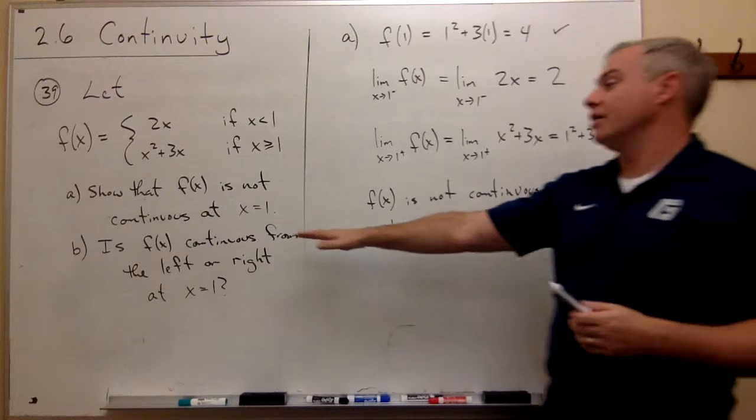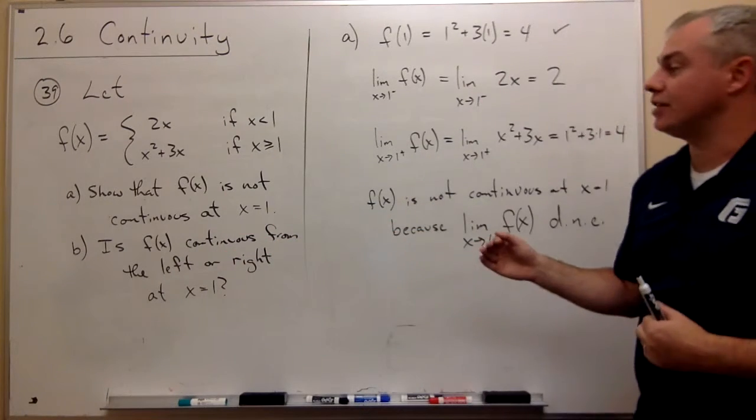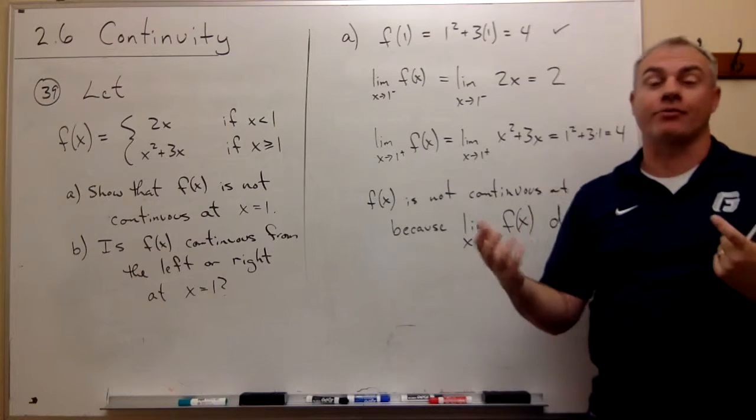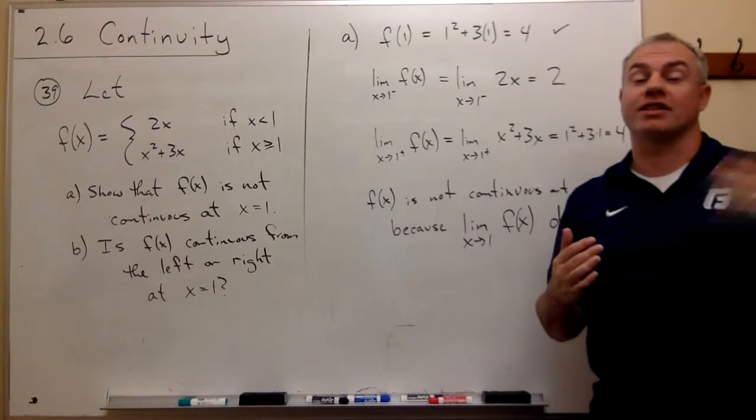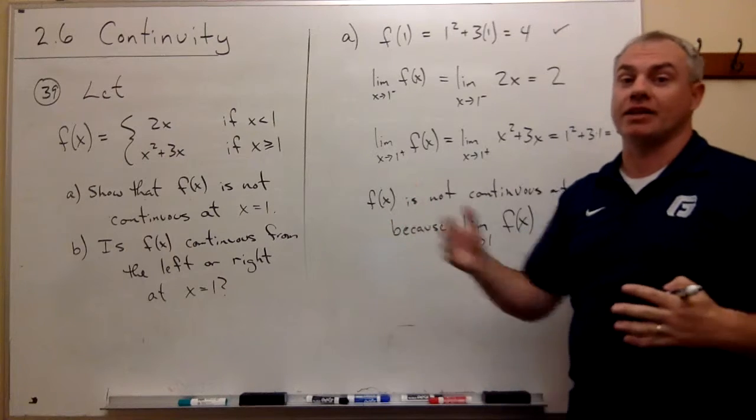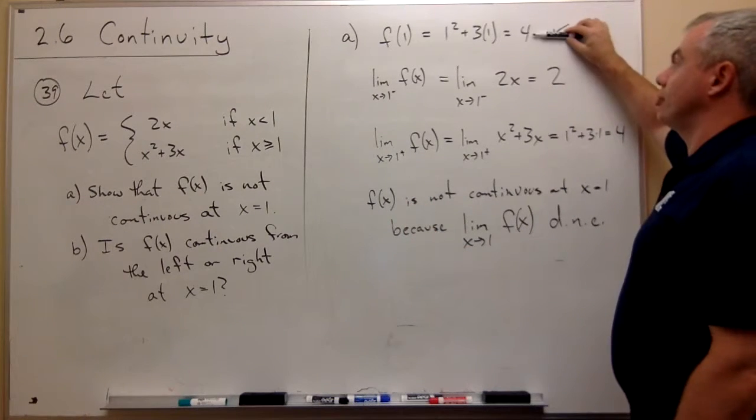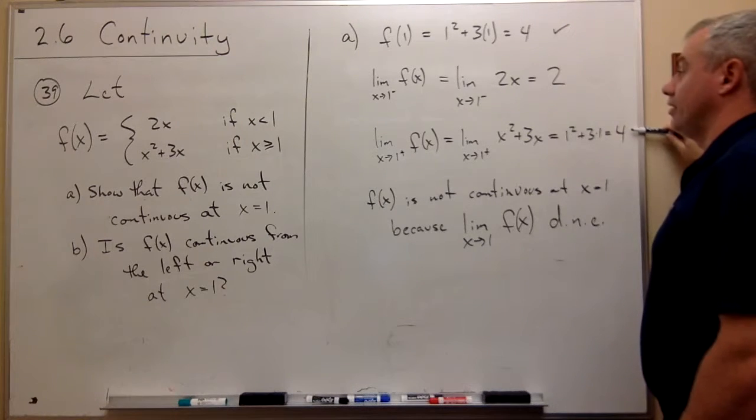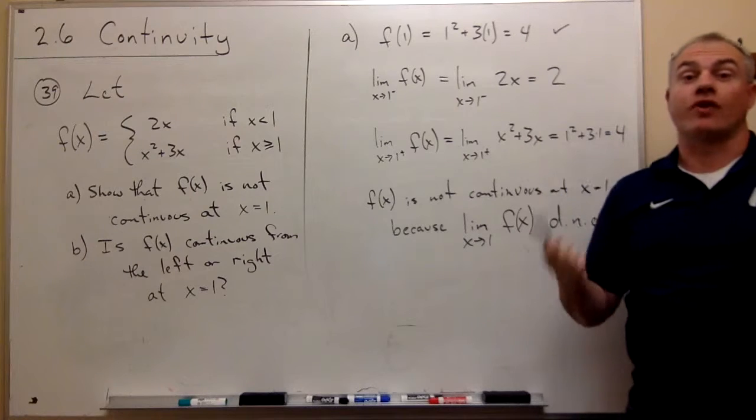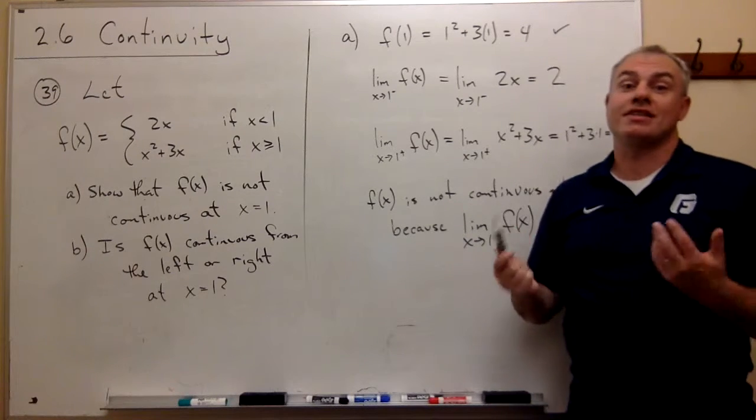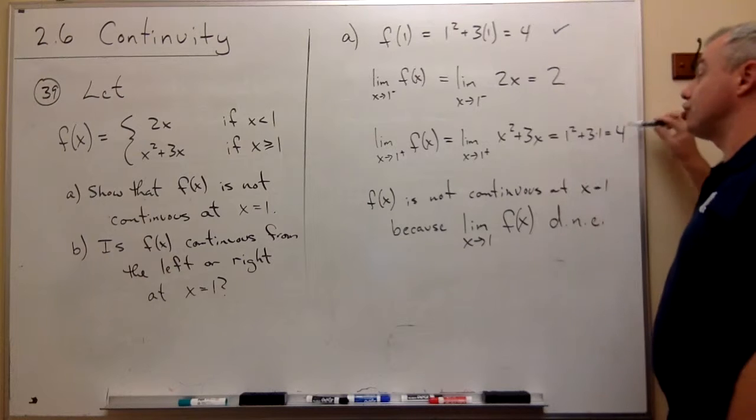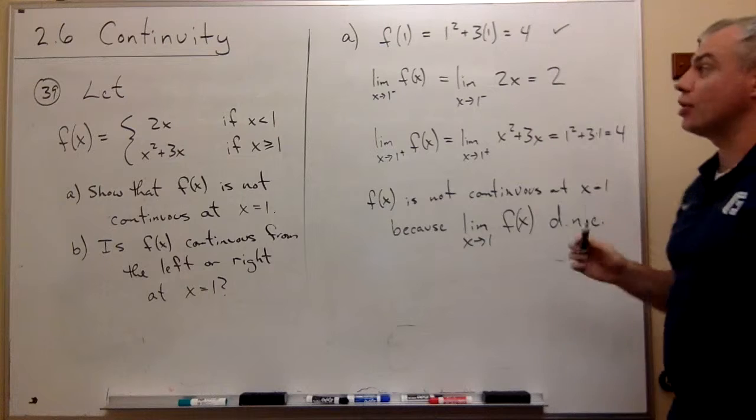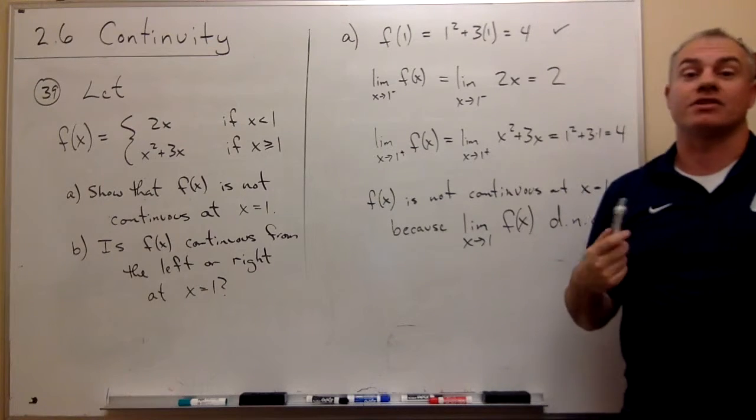For part B, we're trying to answer the question, is this thing continuous from the left or from the right? Well, for it to be continuous from the left or from the right, it just has to agree with either its left hand limit or its right hand limit as a functional value. So does the functional value agree with the left hand limit or the right hand limit? It obviously agrees with the right hand limit, and so we can say that in the case of if I was just looking at the right hand limit, this thing does match up, and so we can say that it is continuous from the right.